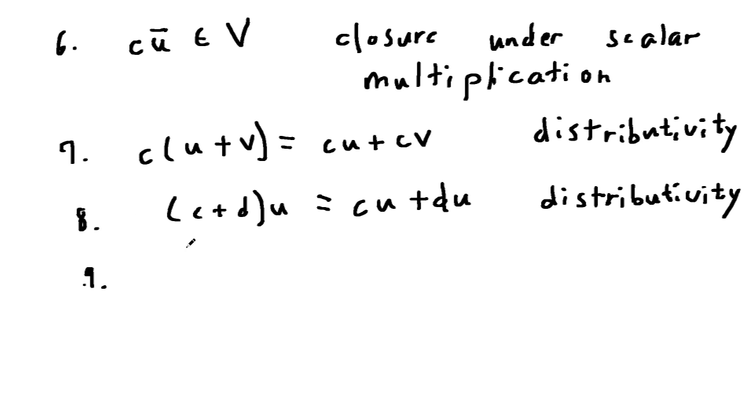The ninth property says that c times du is the same as cd times u. That's called associativity.